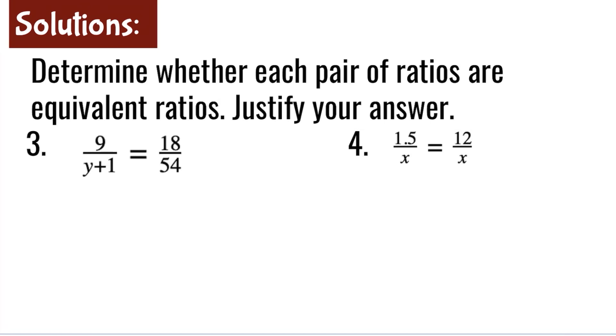Before I do cross products, I will reduce the fraction 18 over 54 as equal to 1 third. I can divide 18 and 54 by 18. It makes it a lot easier in solving this equation. So now I will multiply 9 times 3, which is 27.